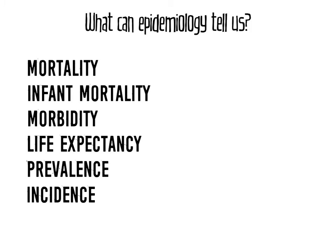Epidemiology can tell us mortality — how many people are dying from disease; infant mortality — how many children in the first year of life are dying; morbidity — the level of disease in the community or population; life expectancy — the number of years people are expected to live; prevalence — the number of people affected by a disease in the community; and incidence — the number of new cases of a disease over a period of time.